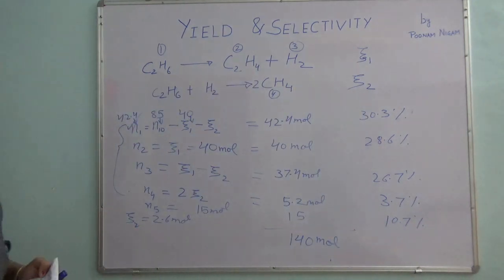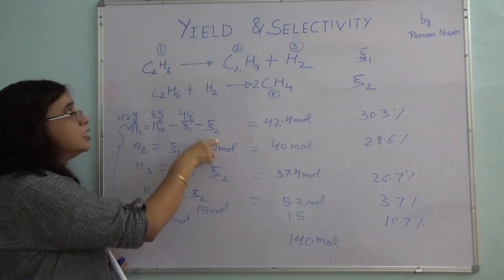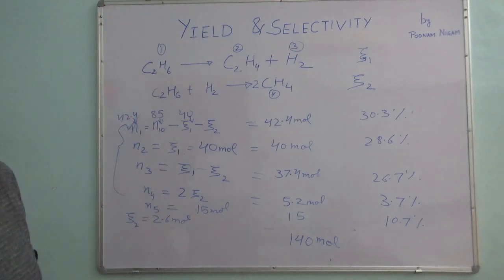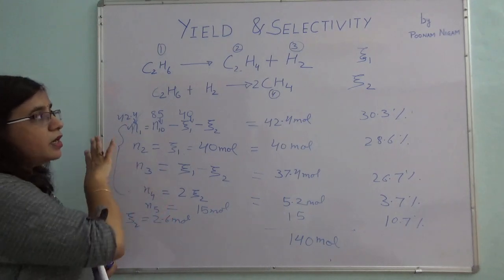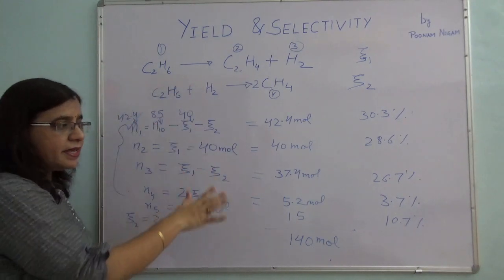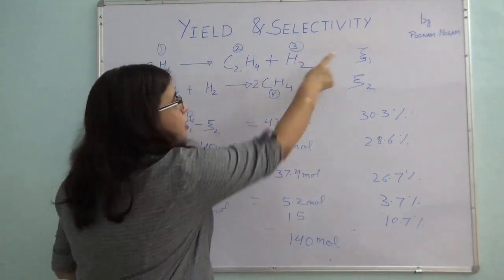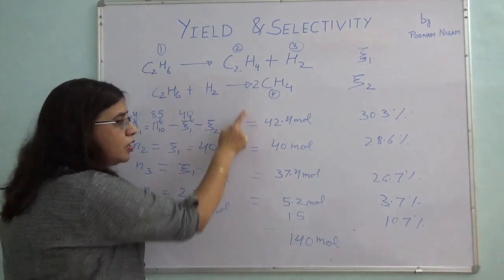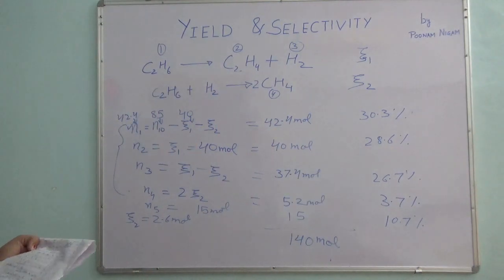This approach makes the problem very simple when handling more than one reaction. Using the concept of extent of reaction, you can quickly calculate all the product stream compositions.